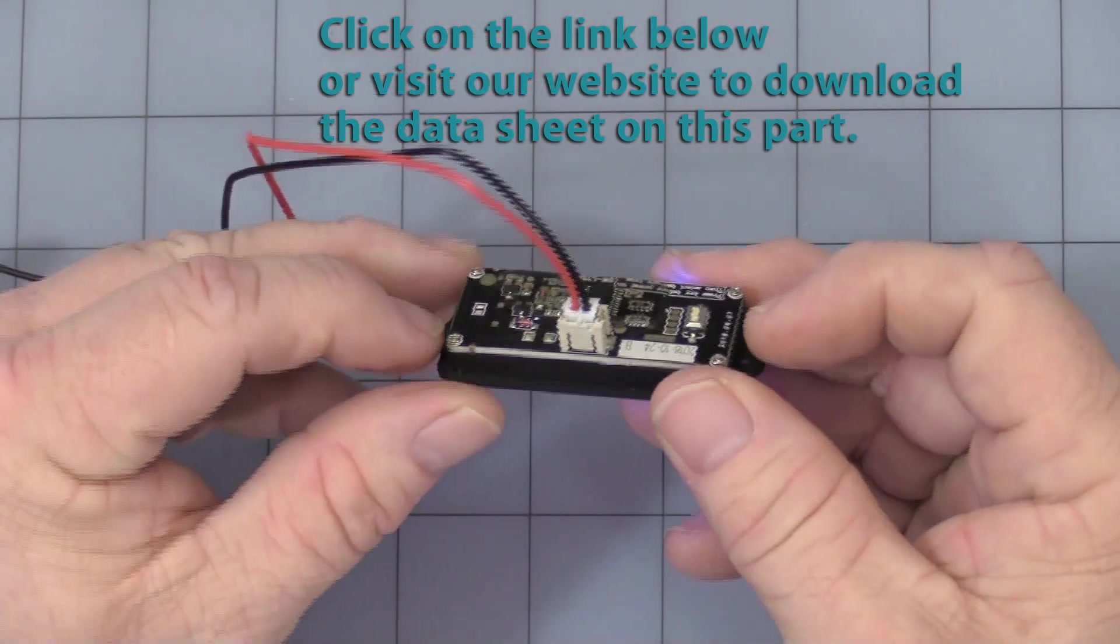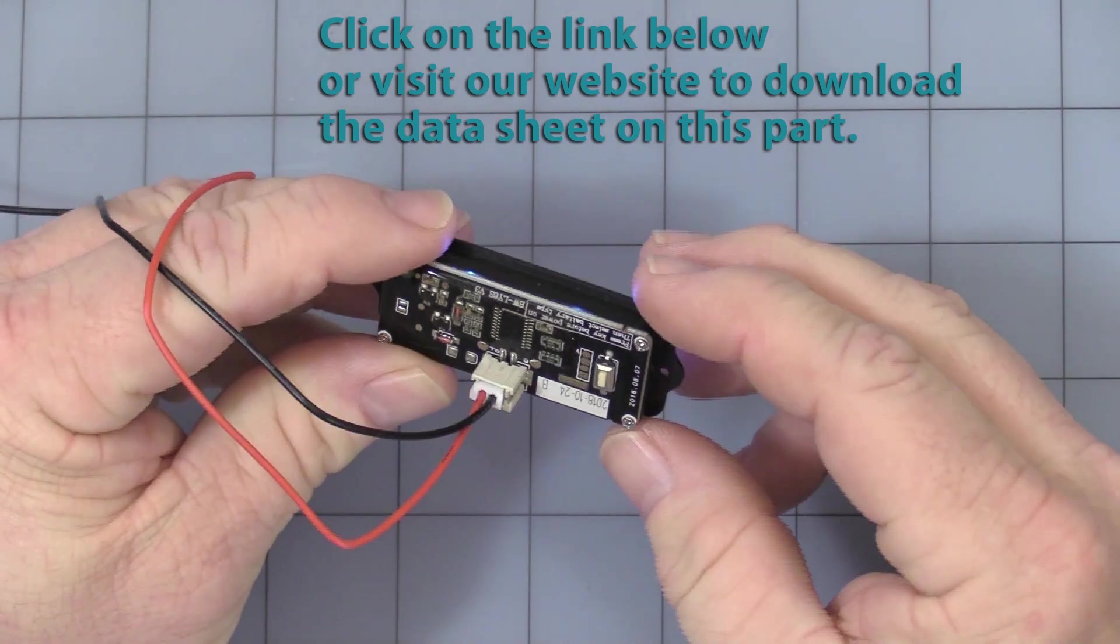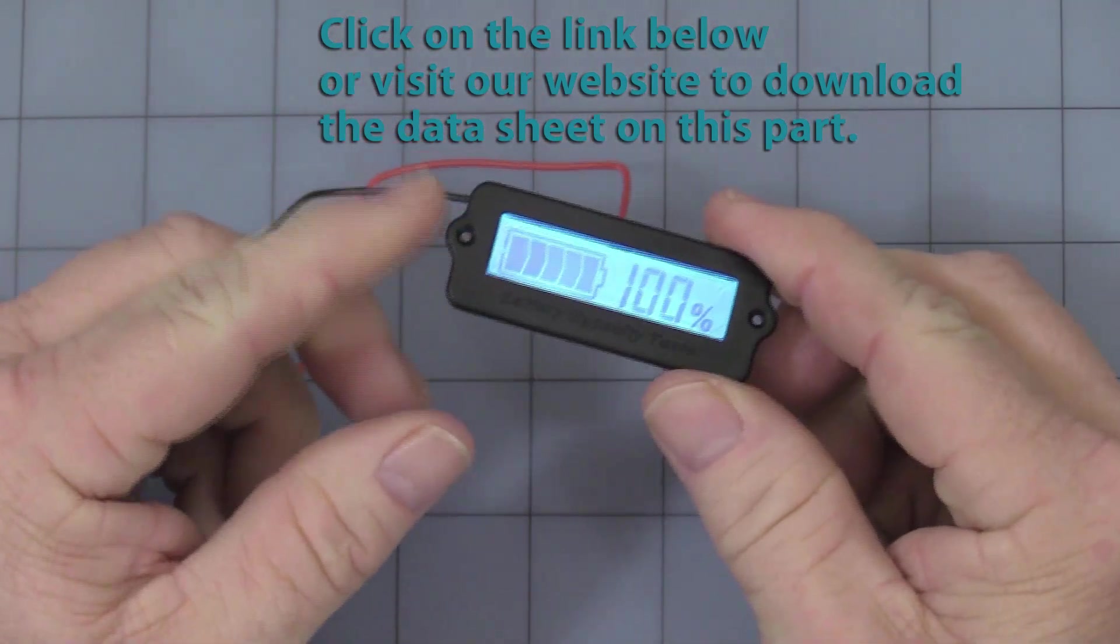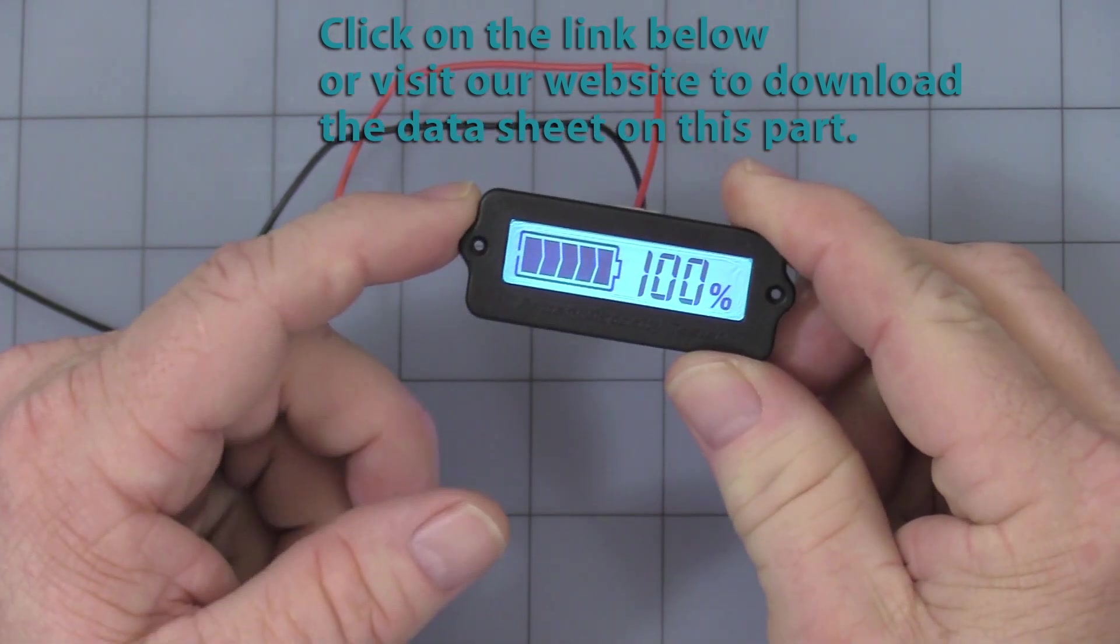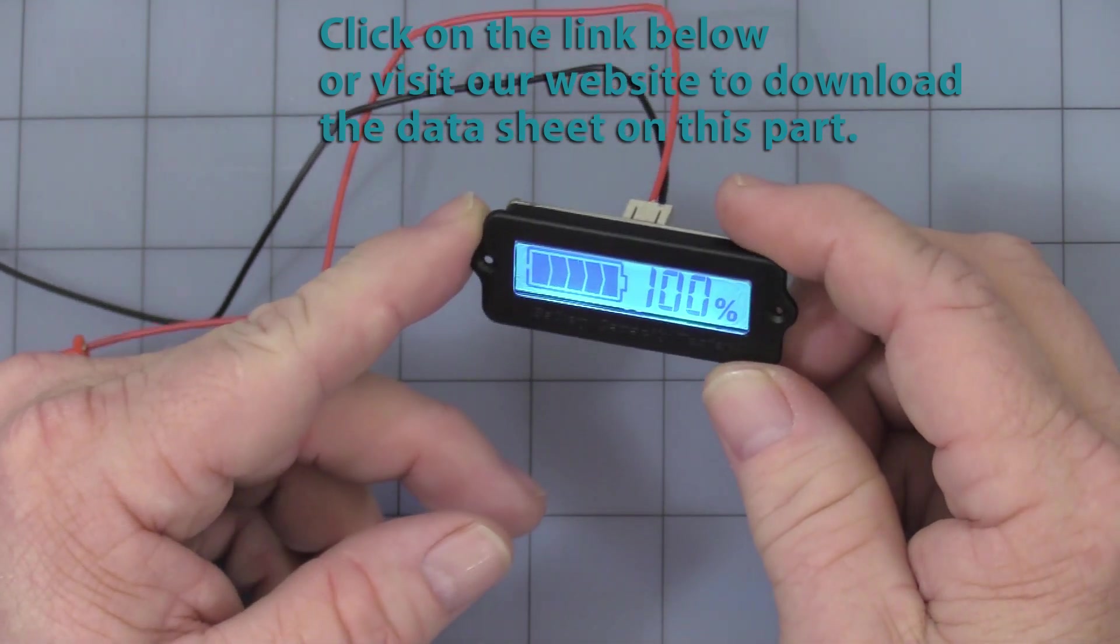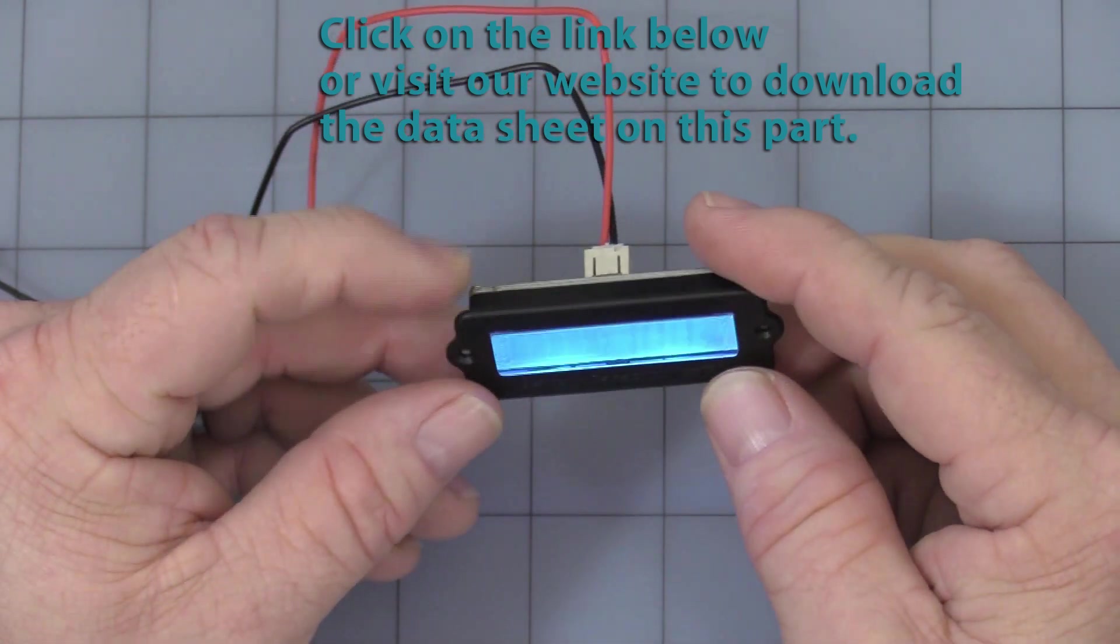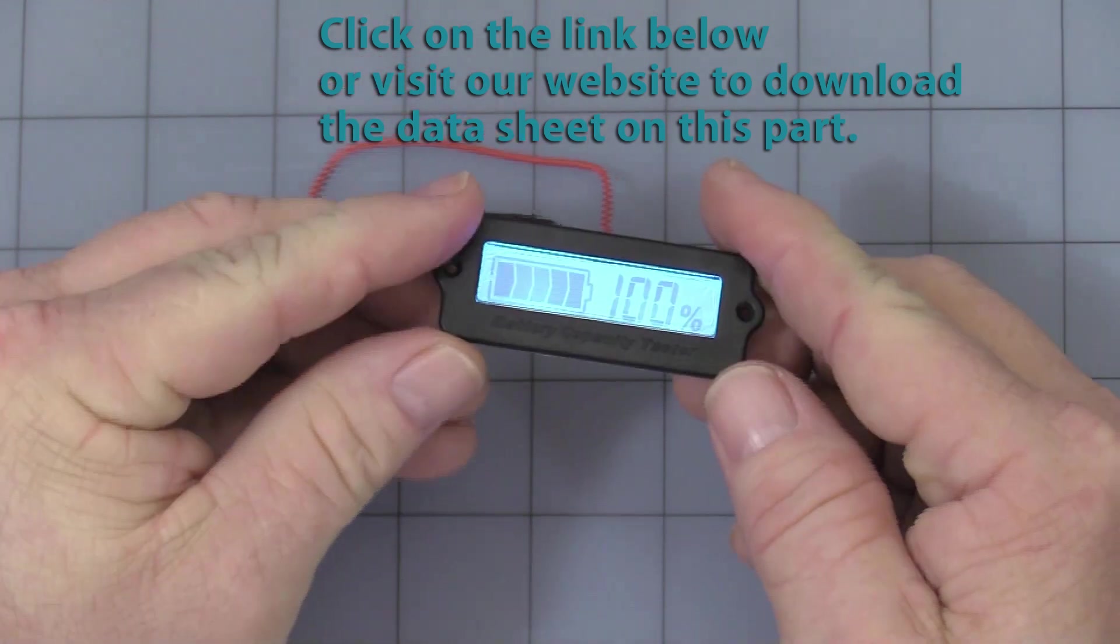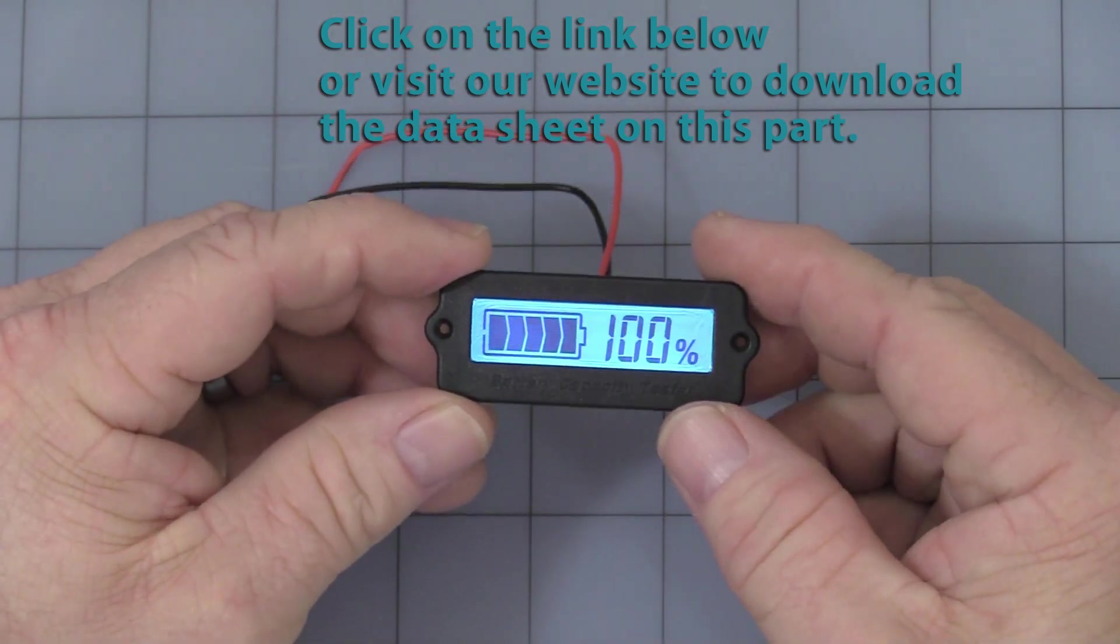First off, it mounts in a 51 millimeter by 20.5 millimeter cutout. And the mounting holes are on 53 millimeter centers. It operates off of 6 to 60 volts DC. That is important. I'll show you in a few minutes why that is important. I also like to move around to give you an idea what the field of view is on the display.